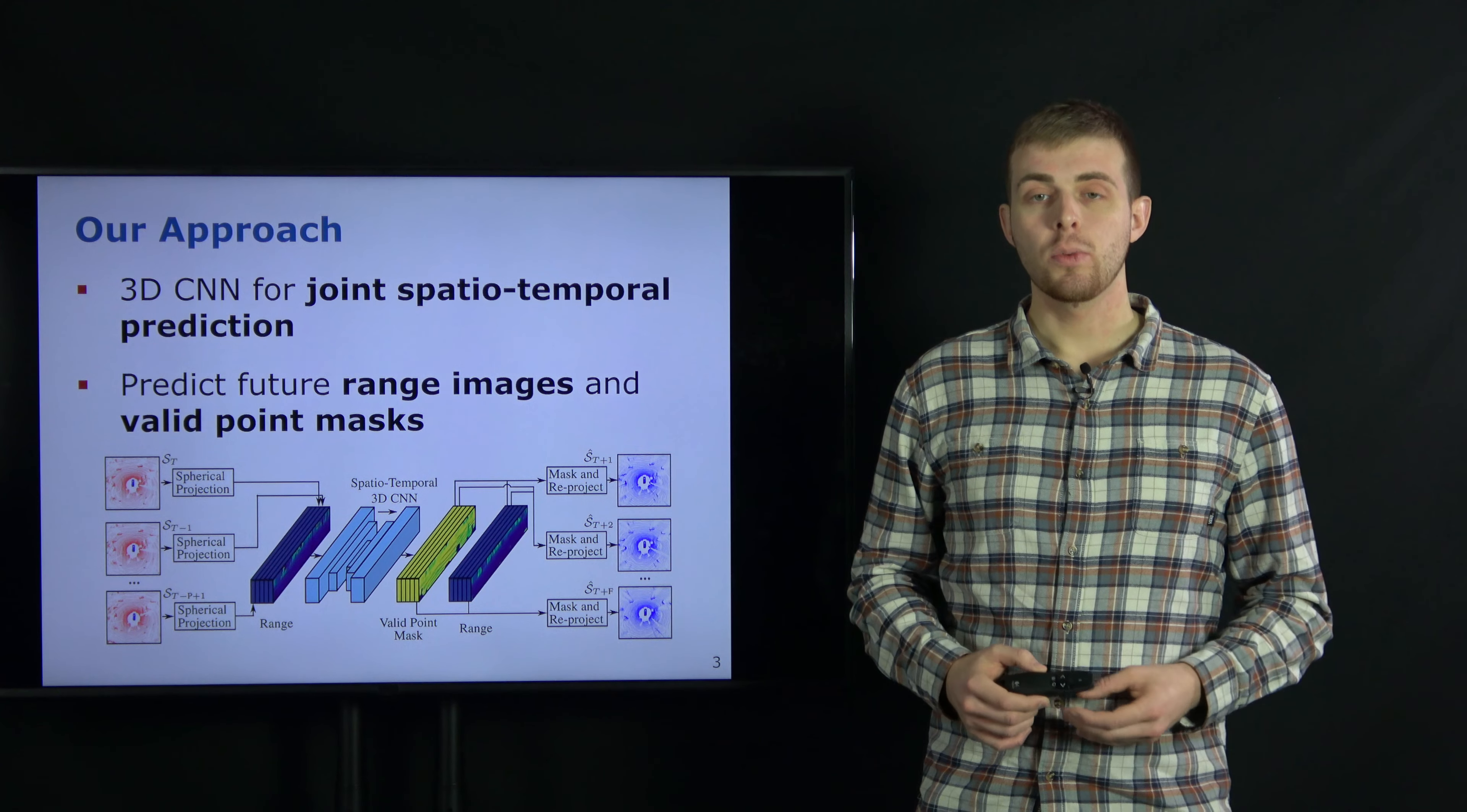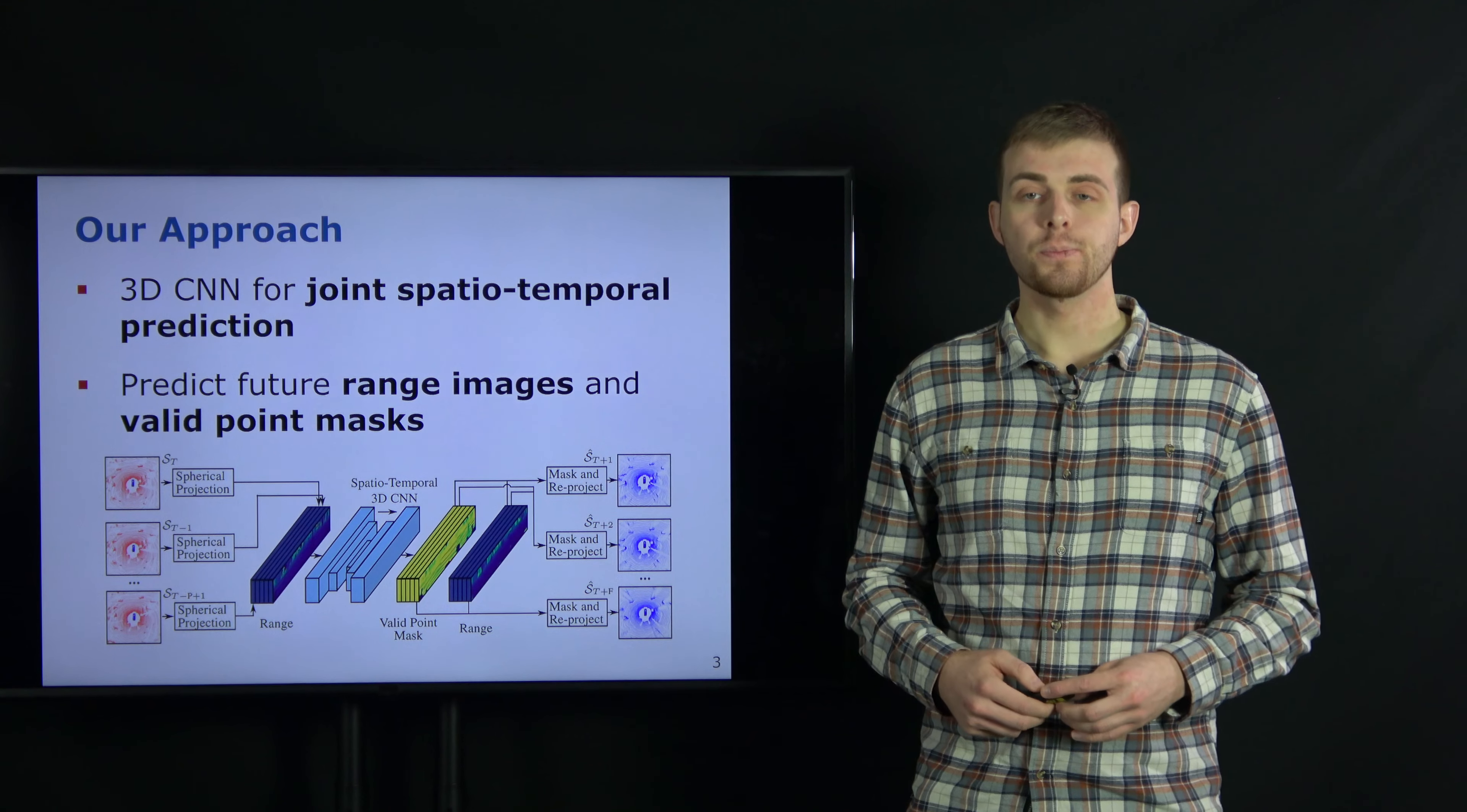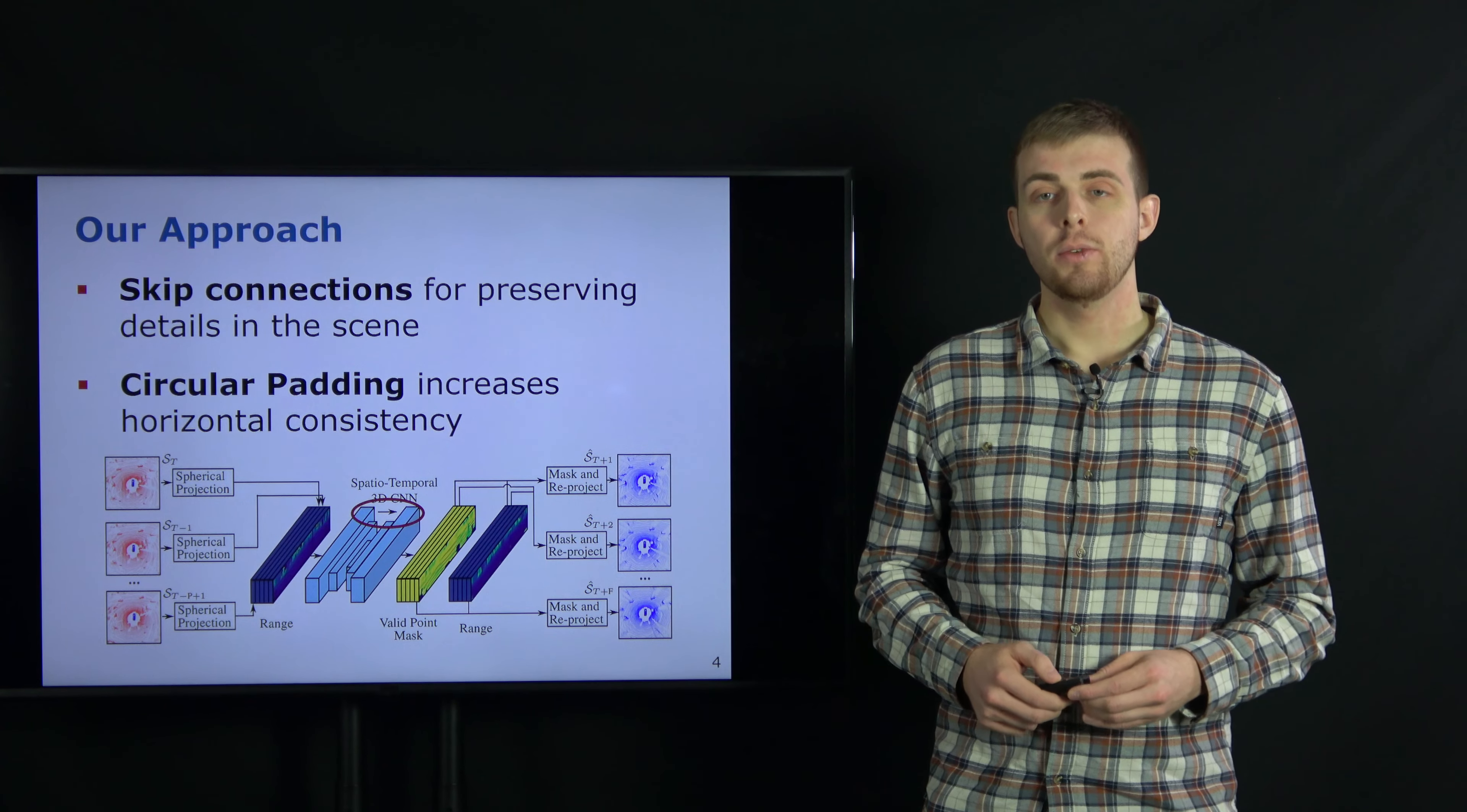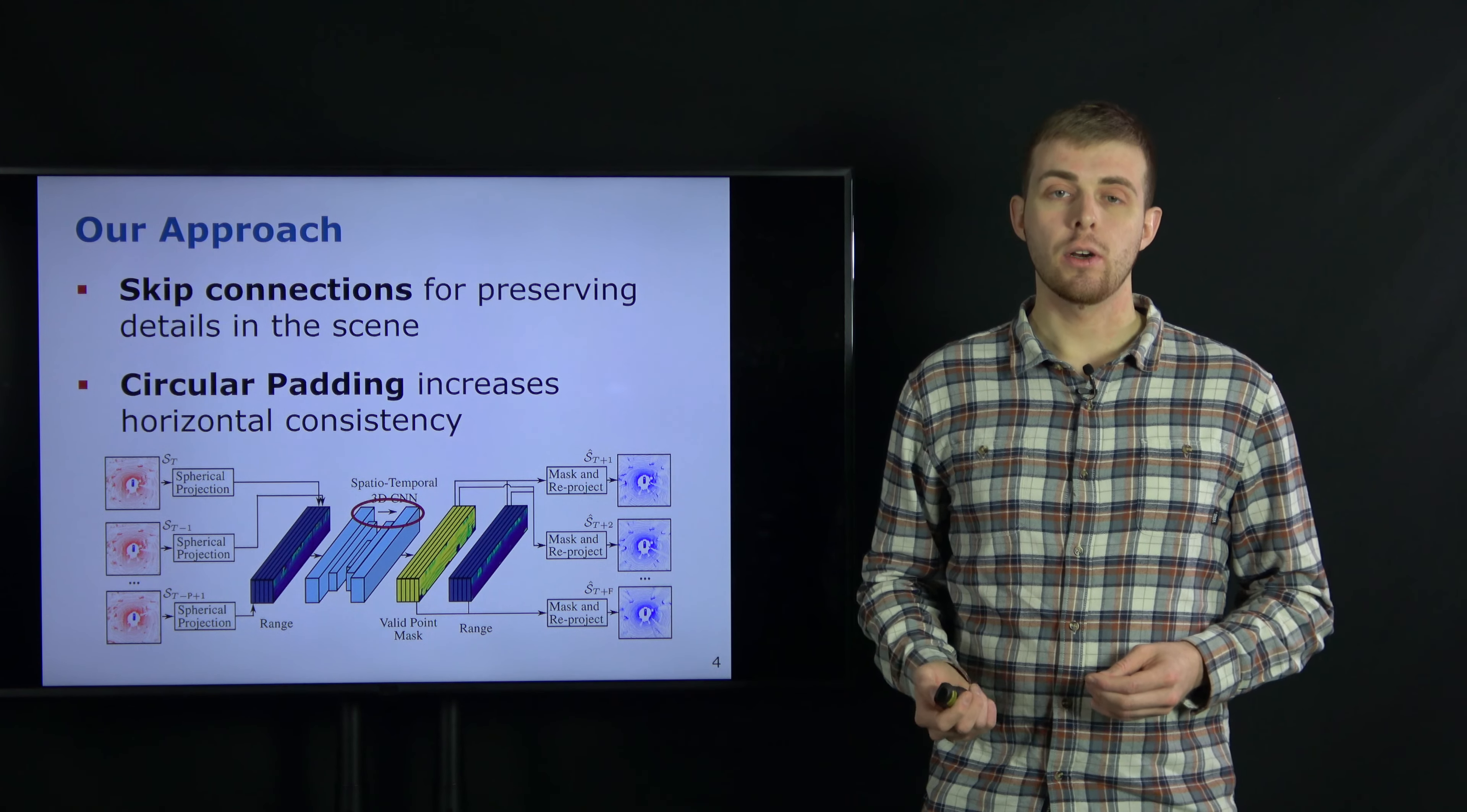After decoding, one network head predicts a volume of future range images. We also predict a valid point mask that classifies if a pixel belongs to a valid point or not. This is needed to mask out areas like the sky in the range image, since there are no corresponding LiDAR points. After masking out invalid points in the future range image, we can reproject them back to the 3D space.